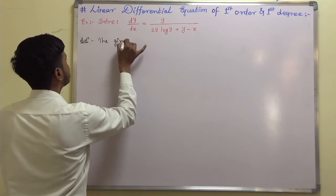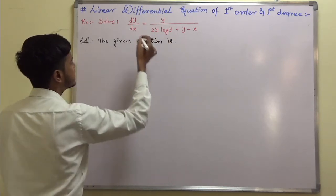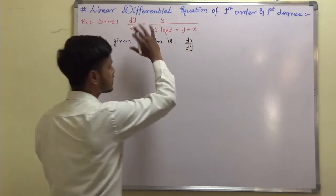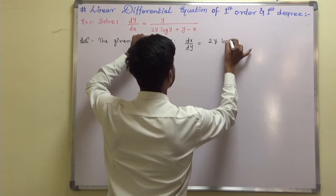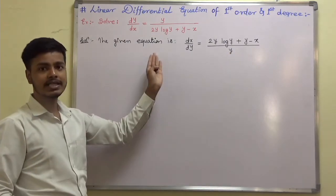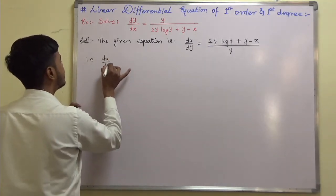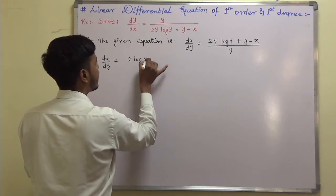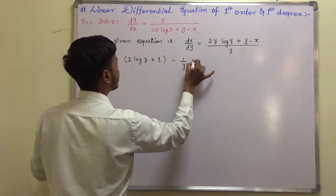The given equation is dy by dx, so I will write it as dx by dy — just interchanging. dx by dy would be 2y log y plus y minus x upon y. Now you just have to separate the term in the denominator. That is, dx by dy is equal to 2 log y plus 1 minus 1 by y into x.